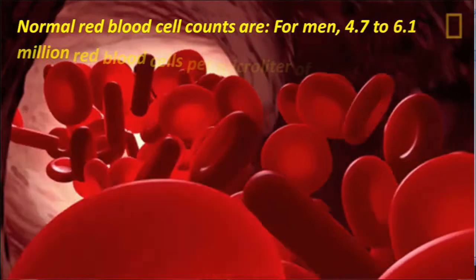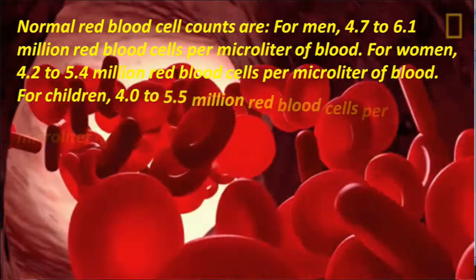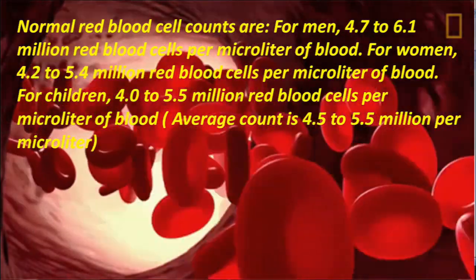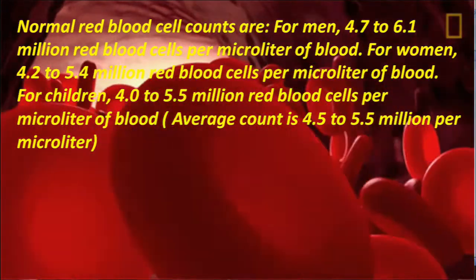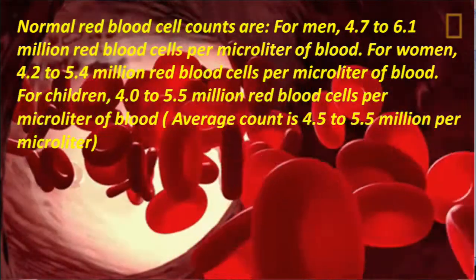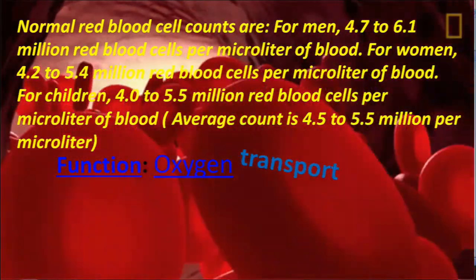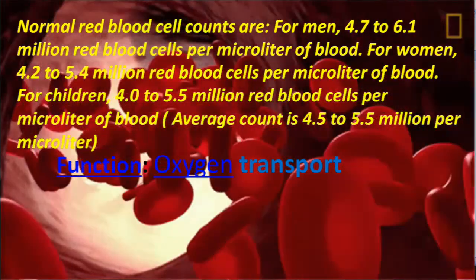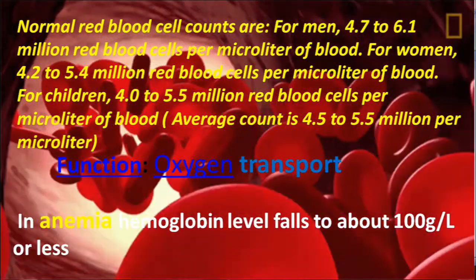Normal red blood cell counts are: for men, 4.7 to 6.1 million red blood cells per microlitre of blood; for women, 4.2 to 5.4 million red blood cells per microlitre of blood; for children, 4.0 to 5.5 million per microlitre of blood. The average count is considered as 4.5 to 5.5 million per microlitre.